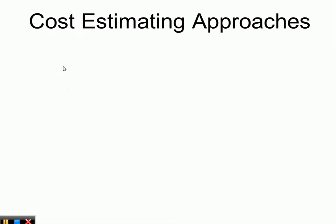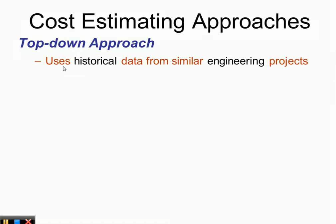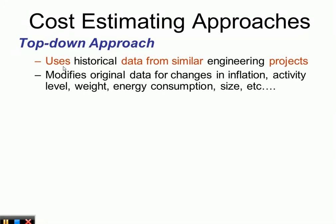There are two basic cost estimating approaches. The top-down approach uses historical data from similar engineering projects and modifies original data for changes in inflation, activity level, weight, energy consumption, size, and other factors. It is best used early in the estimating process.